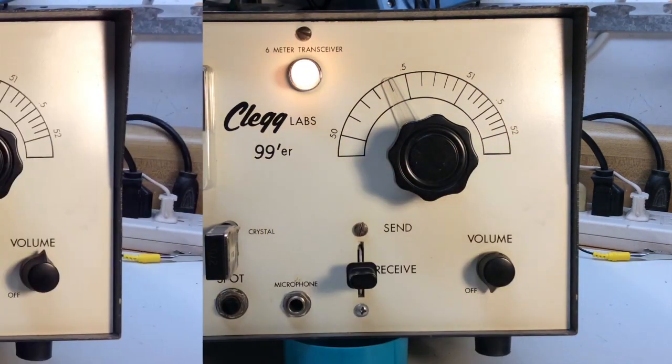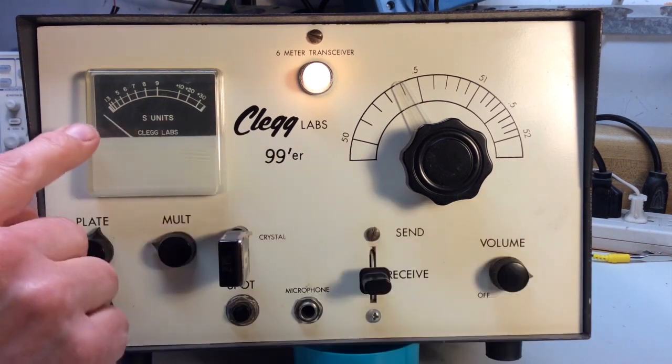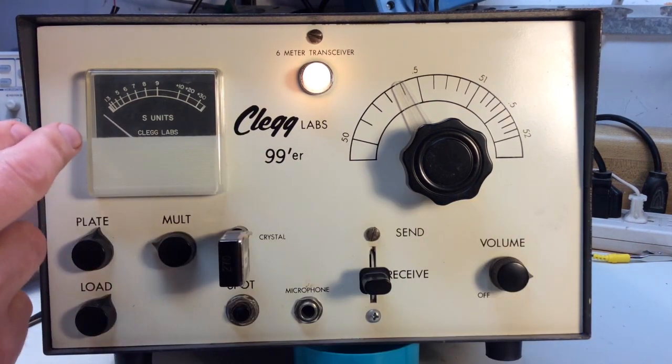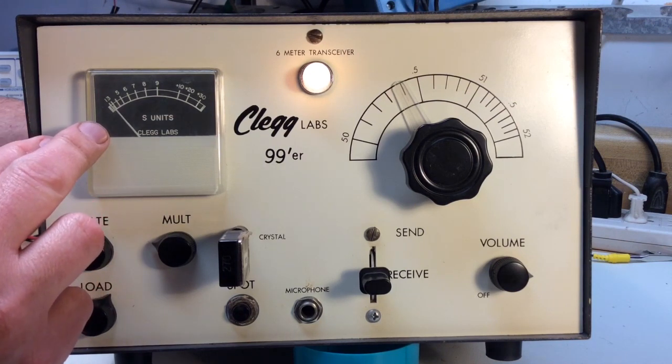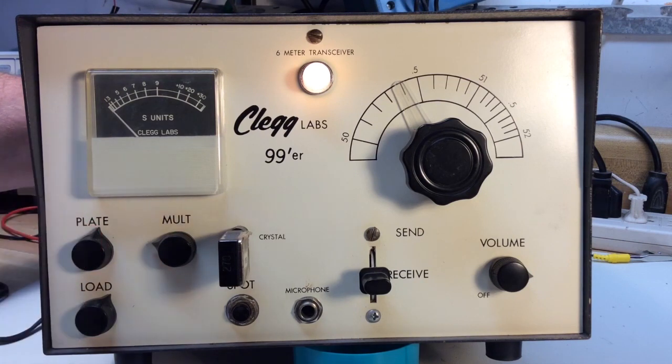All I was doing there is aligning the dial pointer to give me an accurate readout. And here you'll see the S-meter is kind of reading low. There's a setting on the back of the radio for the S-meter. So I will adjust that to read zero on the meter.